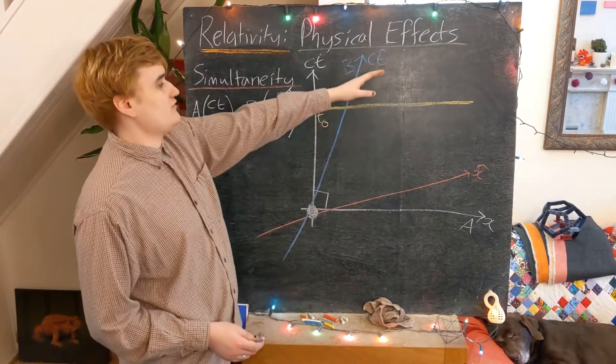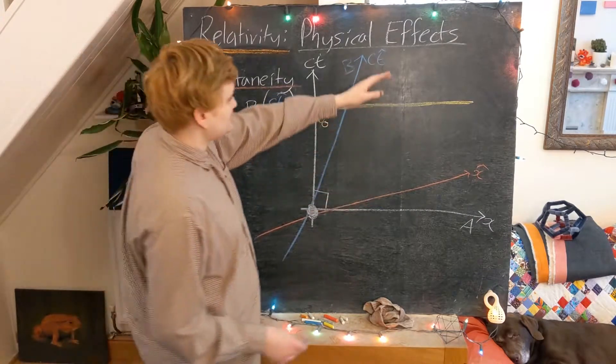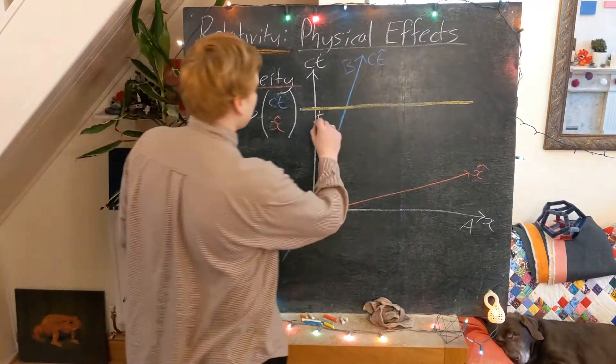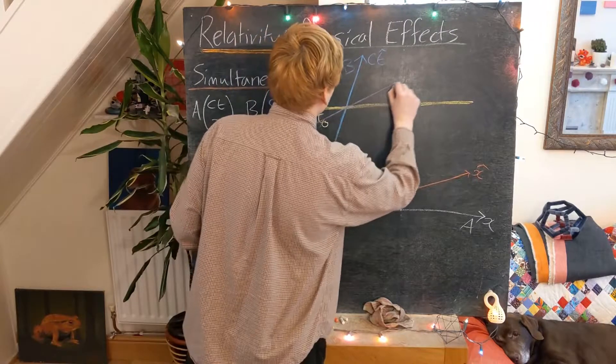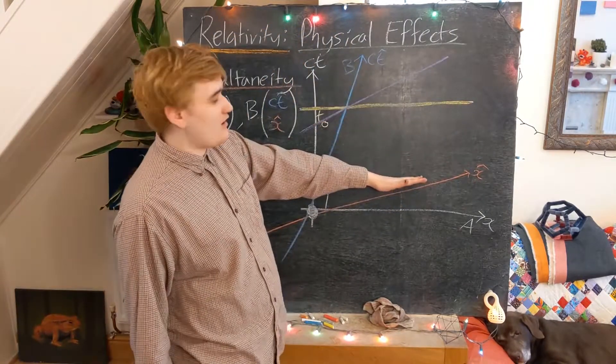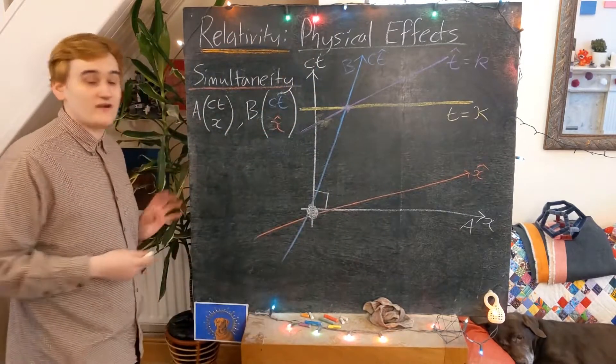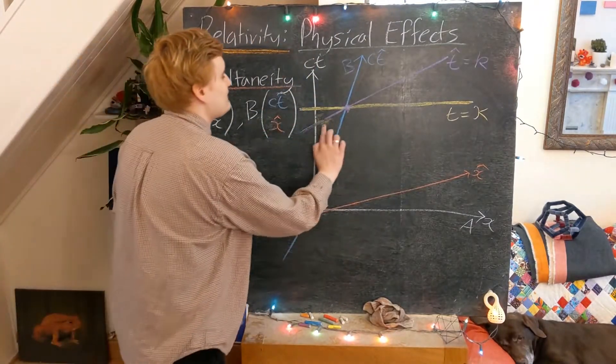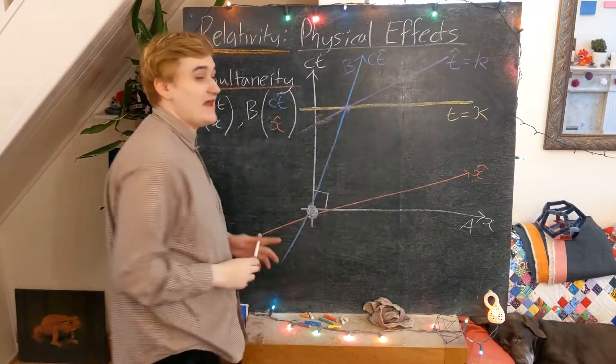And so if I now draw the lines of constant T-hat, they're going to look, say, something like this. Where this purple line is now parallel with our x-hat axis. So now we can already really clearly see the relativity of simultaneity in action.